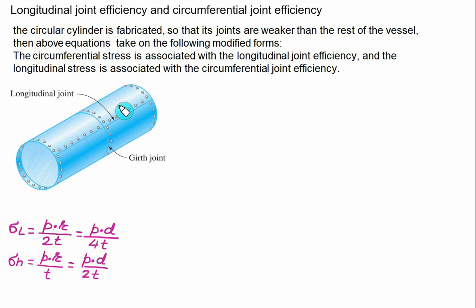Here we introduce two concepts: the longitudinal joint efficiency and the circumferential joint efficiency, which are two measures of the strength and reliability of welded joints in pipes and other cylindrical structures like boilers.